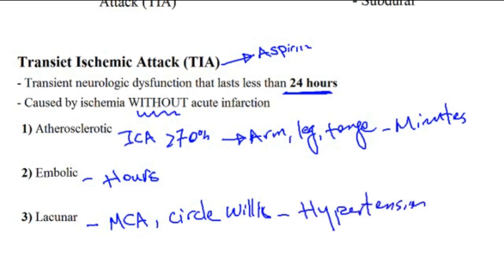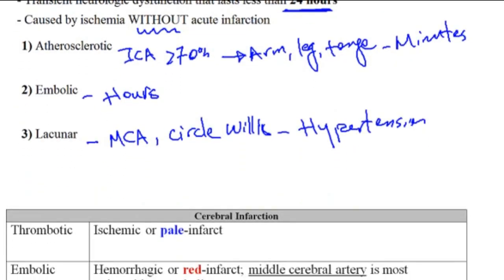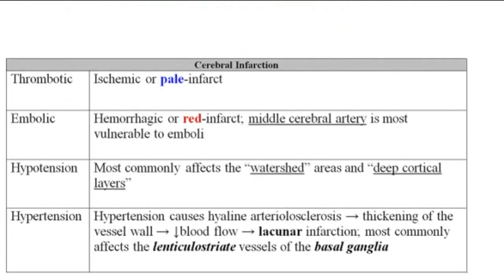Moving on to stroke. There are four different forms of ischemic stroke. It could be thrombotic, which is most commonly caused by atherosclerotic lesions, which causes decreased perfusion of the brain. As a consequence, there would be a pale infarct because of decreased blood perfusion.